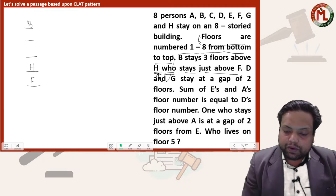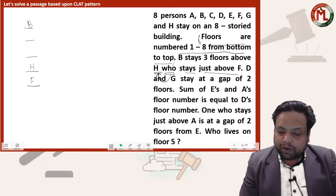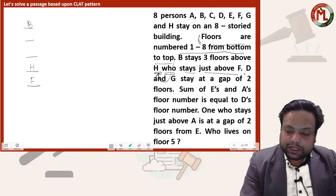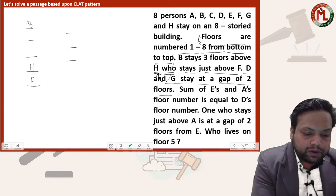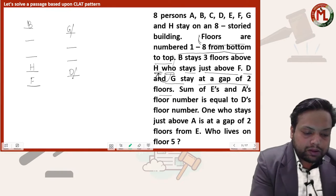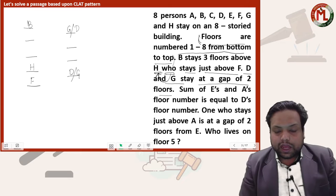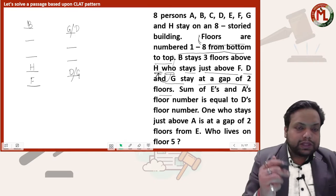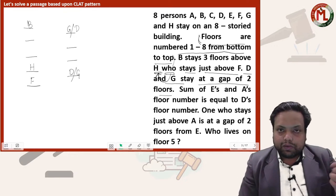The second clue: D and G stay at a gap of two floors. That means between G and D there are two floors, but who is above and who is below we do not know. If G is above we put G above; if D is above we put D above.